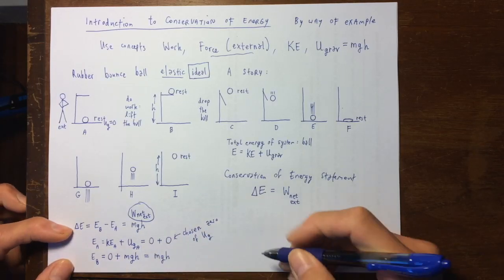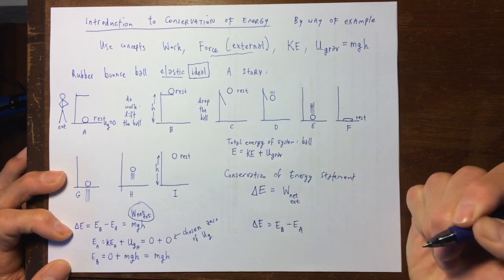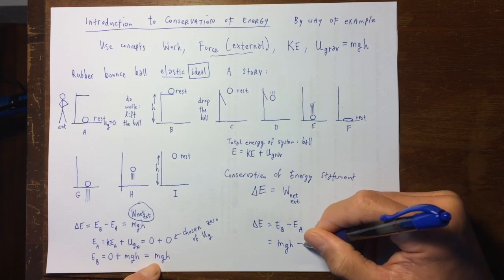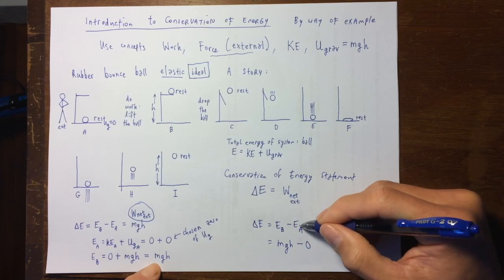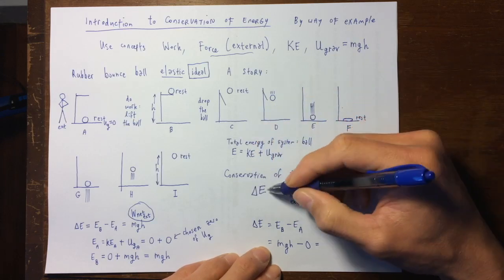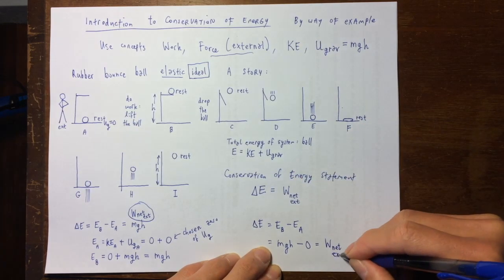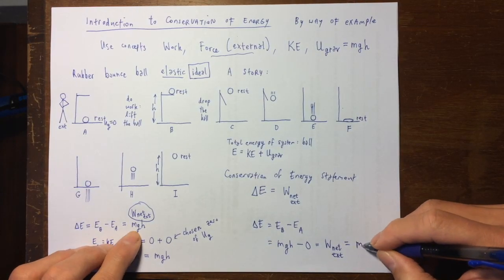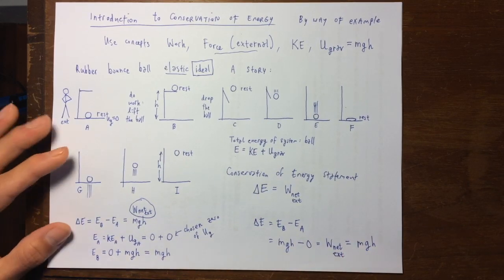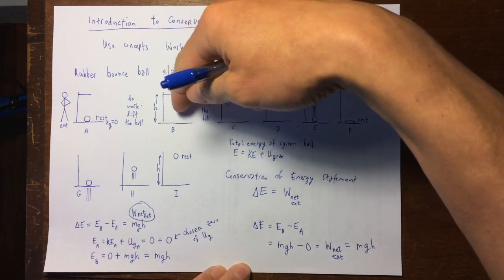Since EB minus EA is delta E, EB is MGH and EA is zero. So MGH minus zero — according to the conservation of energy statement, the net work done by external forces is the reason why the energy of a system can change. Here the net work by external forces was MGH. So MGH equals MGH. Let's go on and study some transitions that happen later.